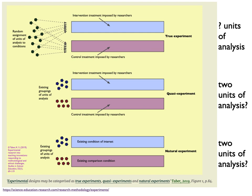Often instead the logic adopted is that as we cannot meet the requirements for a valid experiment, we are justified in carrying on regardless and just ignoring that requirement. If a manufacturer of pickled onions was selling jars of vinegar as pickled onions, it is likely their customers would not be prepared to accept this just because the company was having difficulty sourcing onions. Yet readers of research papers are assumed to be less demanding of rigour. Science education researchers often sell jars of vinegar labelled as pickled onions.